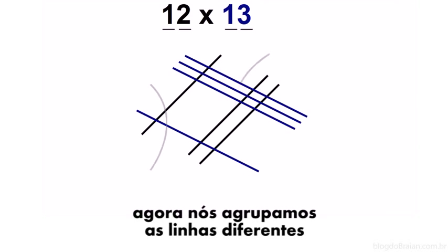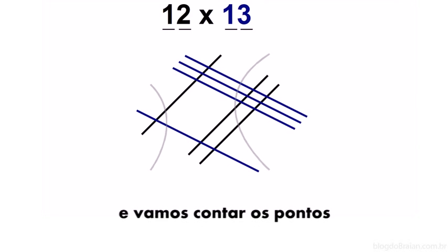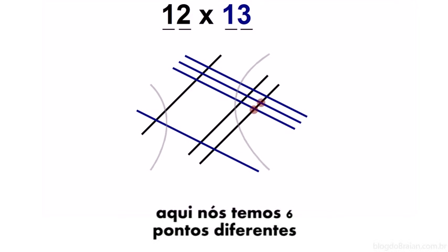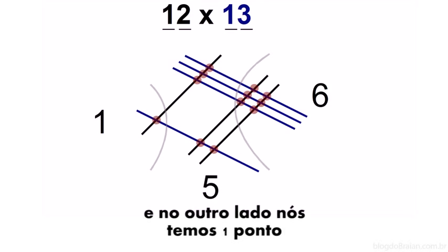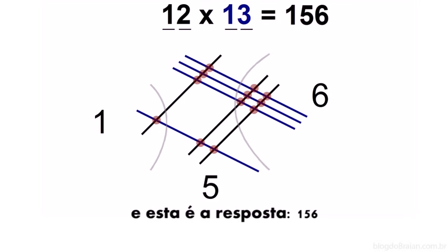Now we'll group together different lines, and we'll count the dots. Here we have six different dots. In the middle, we have five different dots. And on the other side, we have one dot. And that's the answer, 156.